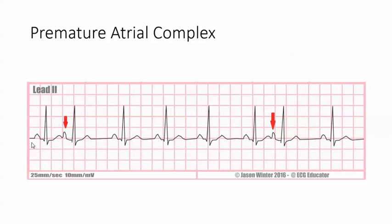This is a sinus rhythm — they have a normal P before the QRS, the PRI is normal, and the QRS is normal. Let's mark the sinus beats: this one, this one, here, here, here, and here.